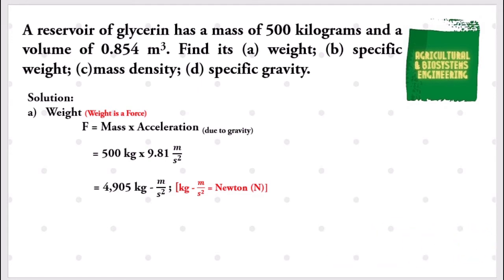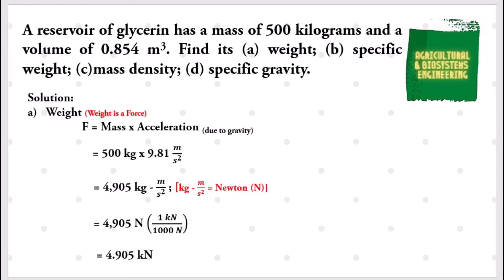We know that kilogram-meter per square second is the same as newton, so we have 4905 newtons. Converting to kilonewtons using the factor 1 kilonewton equals 1000 newtons, we multiply 4905 newtons by the conversion factor and get a final answer for our weight of 4.905 kilonewtons.